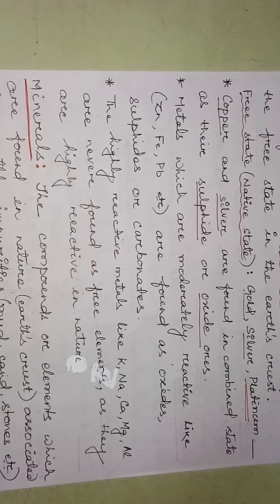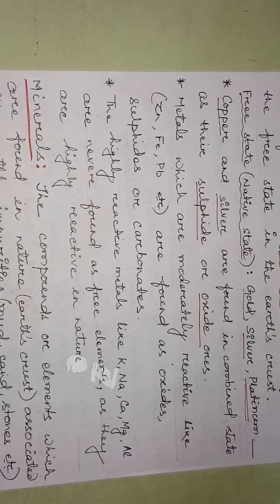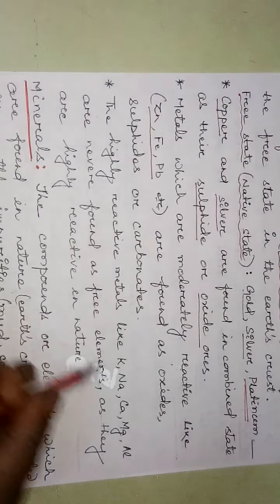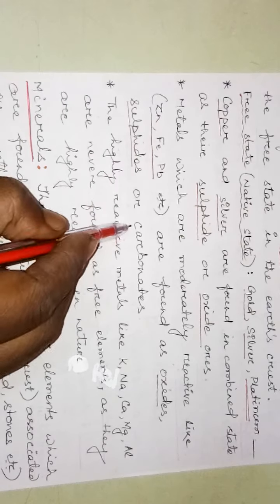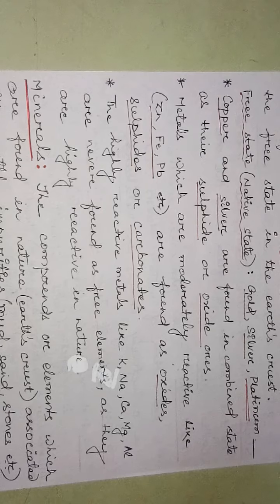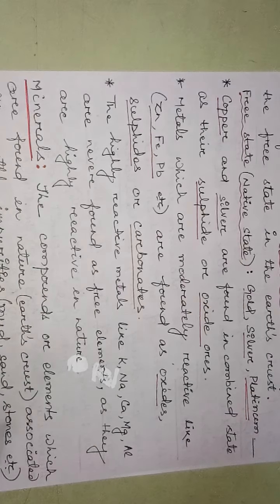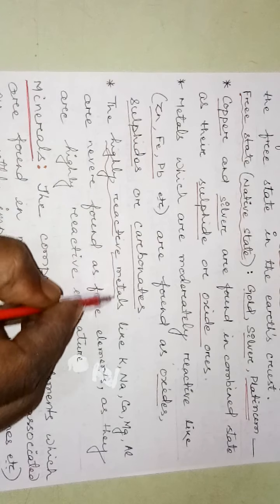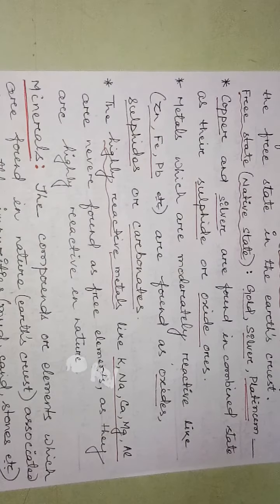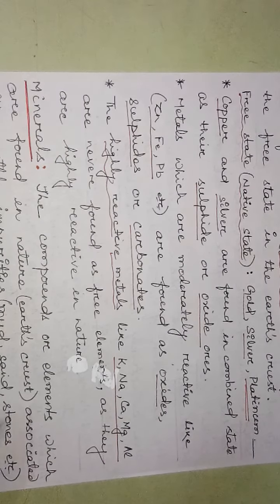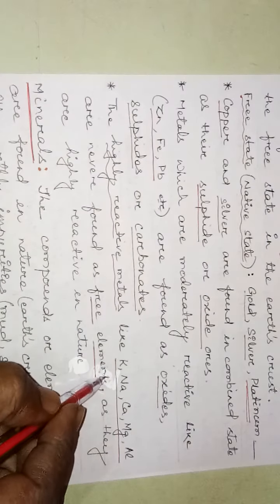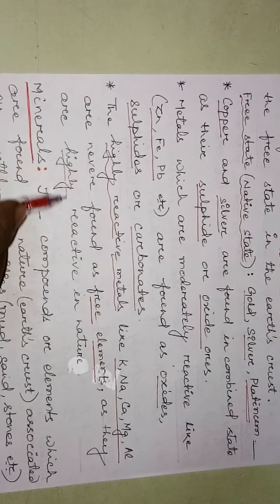Moderately reactive metals from the reactivity series — like zinc, iron, and lead — are found as oxides, sulfides, or carbonates. The metals present at the top of the reactivity series which are highly reactive — like sodium, potassium, calcium, magnesium, and aluminium — are never found in free state or as free elements, as they are highly reactive in nature.